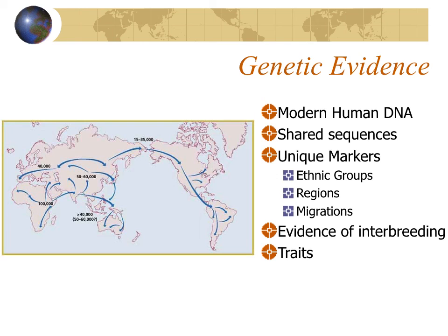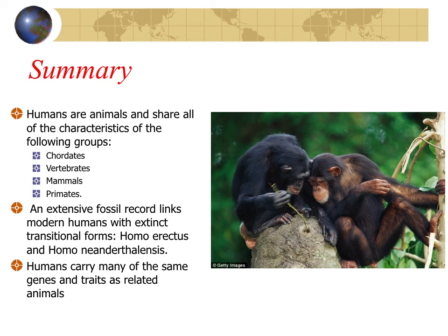Modern humans migrated into the Middle East about 100,000 years ago, into Australia and southern Asia by 50,000 years ago, and finally into North and South America somewhere between 15,000 and 30,000 years ago. To summarize: humans are animals sharing characteristics of chordates, vertebrates, mammals, and primates. There is an extensive fossil record linking modern humans with transitional forms, particularly Homo erectus and Homo neanderthalensis, and we carry many of the same genes and traits as related animals — just developed more extensively.